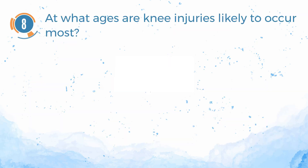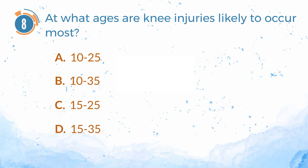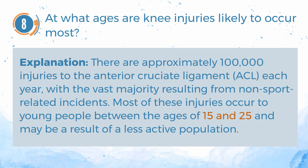Number 8. At what ages are knee injuries likely to occur most? A. 10–25. B. 10–35. C. 15–25. D. 15–35. The answer is C, 15–25. Explanation: there are approximately 100,000 injuries to the anterior cruciate ligament (ACL) each year, with the vast majority resulting from non-sport-related incidents. Most of these injuries occur to young people between the ages of 15 and 25 and may be a result of a less active population.